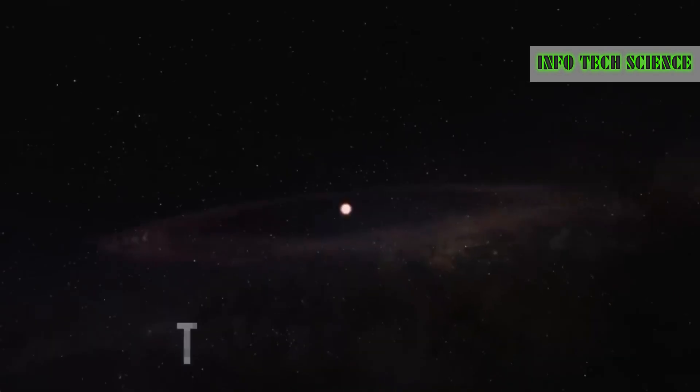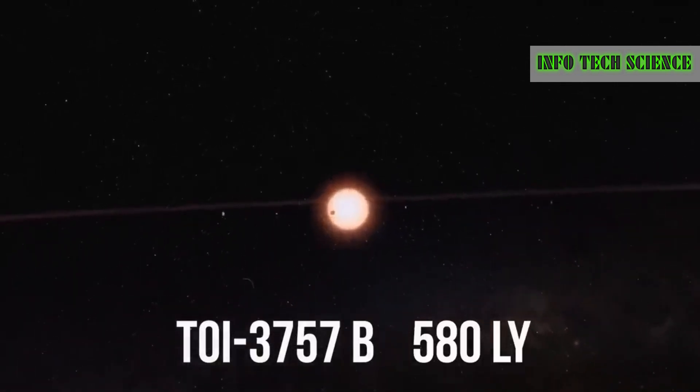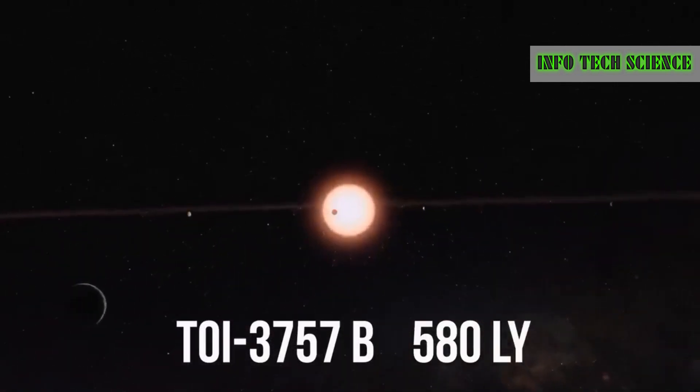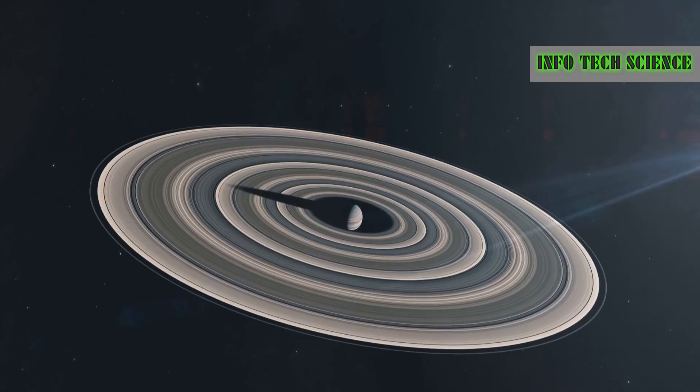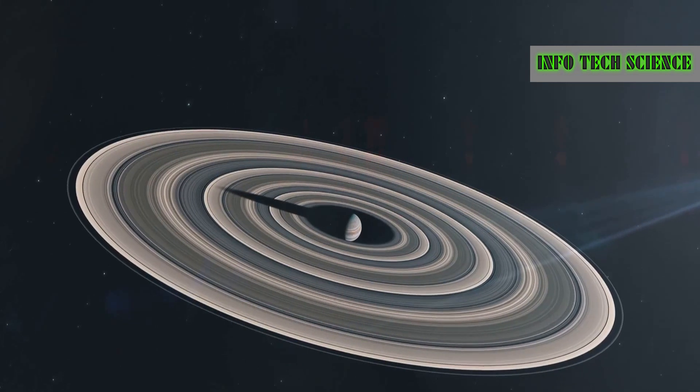Dear viewers, in this video we will study different horror planets. So let's start with TOI-3757b. This mysterious entity is hiding 580 light years away from Earth. It's a gas giant with a radius 1.5 times that of Jupiter.